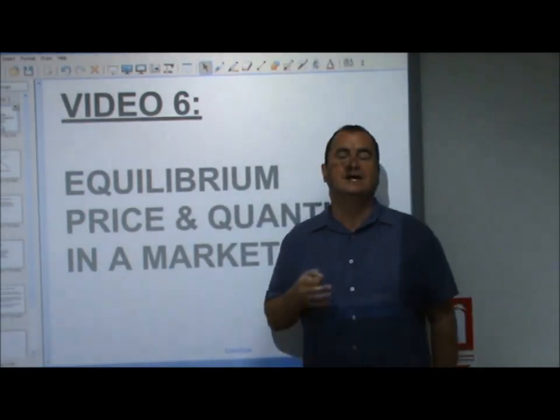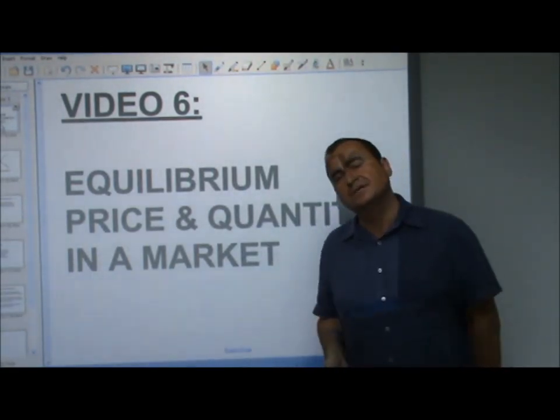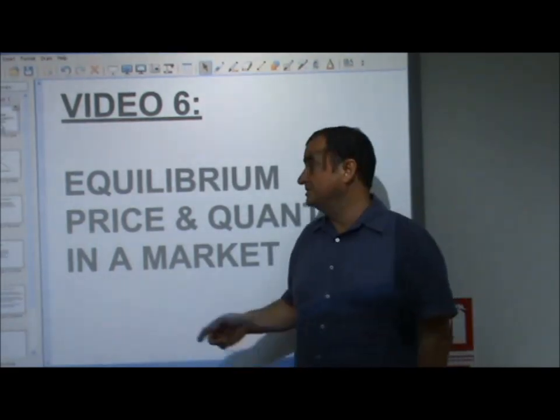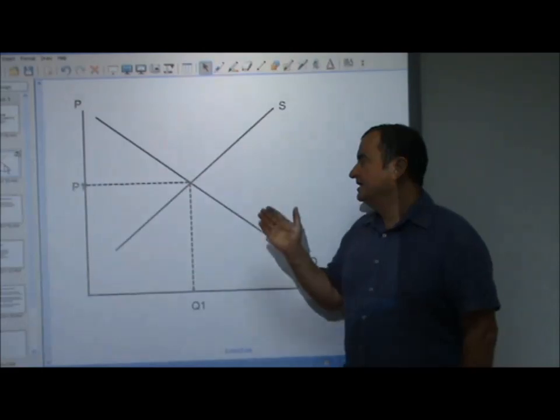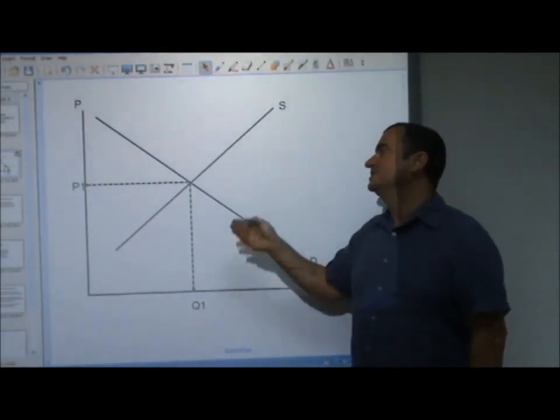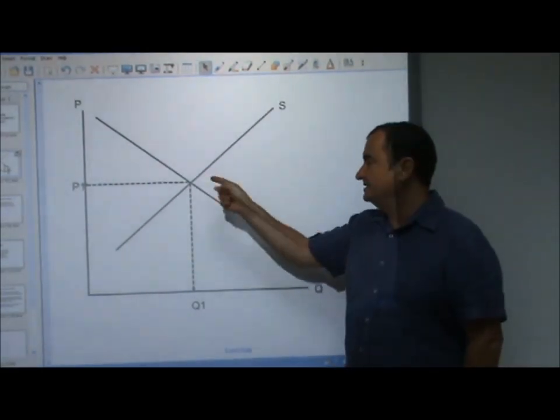We've learned what demand curves are and supply curves are. We know demand curves slope downwards and supply curves slope upwards. If we put those two together, we get a point, one point where demand equals supply and that's here.